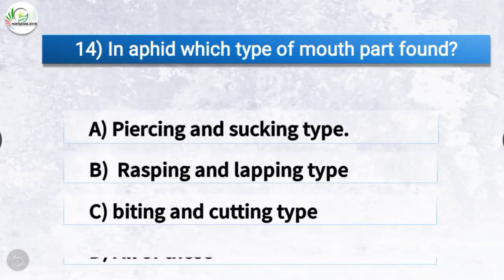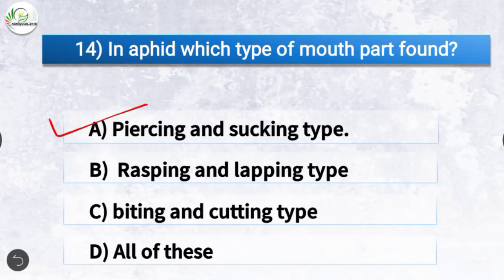Question number 14: In aphid, which type of mouth part is found? The correct answer is option A, piercing and sucking type. In aphids, we find piercing and sucking type of mouth part.